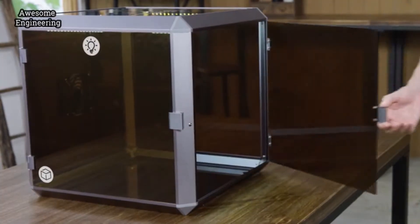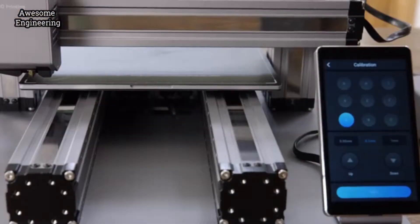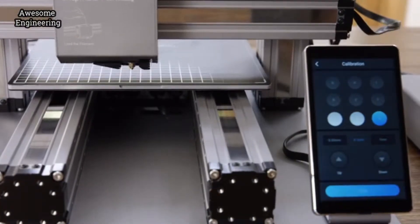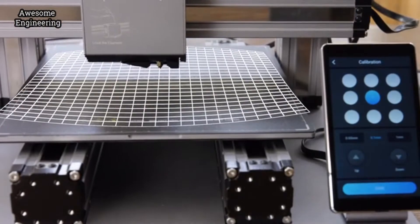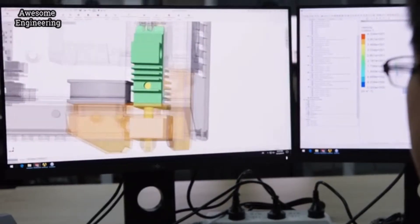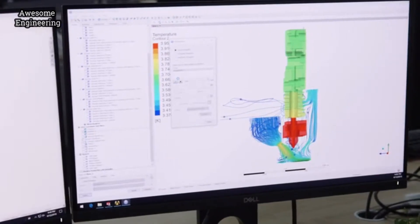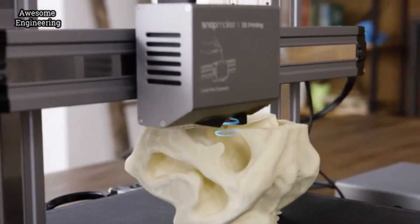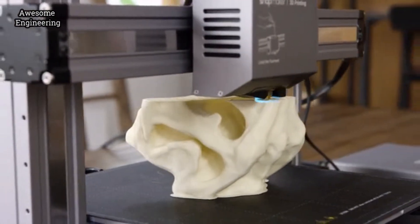The new Snapmaker includes an automatic bed leveling feature that ensures you print on a level bed every time. The cooling system is redesigned to cool the print in the most efficient way possible. If the filament runs out, Snapmaker will pause and notify you to load new filament.